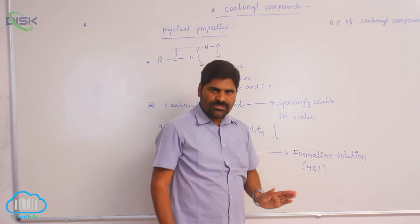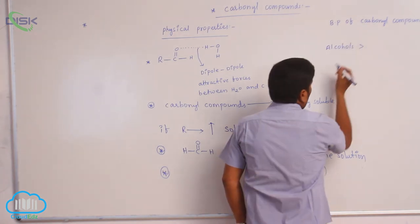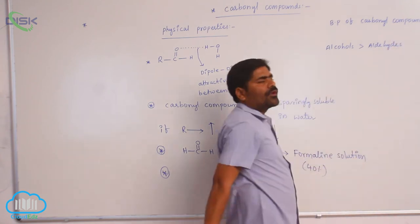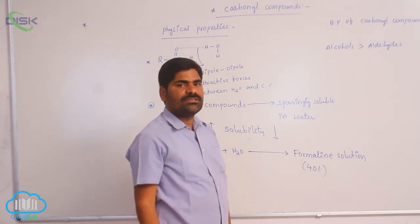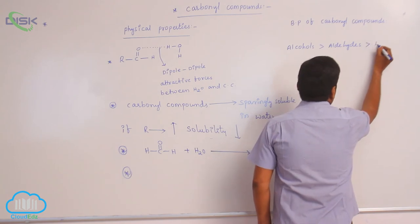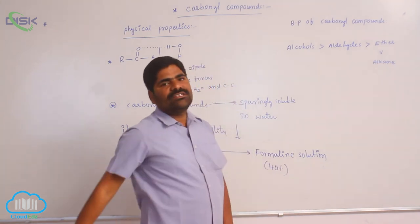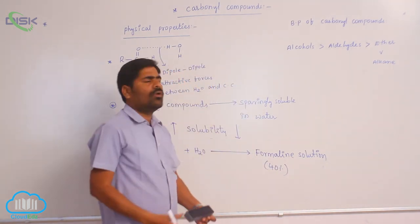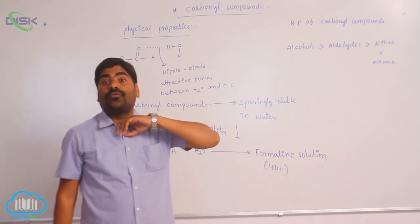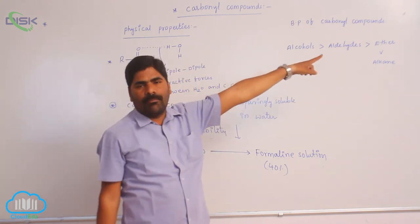That is the reason why the order of boiling points is: alcohols first, then aldehydes (carbonyl compounds), because dipole-dipole attractive forces are greater compared to ethers and alkanes of the same molecular mass. Both aldehydes and ethers have dipole-dipole attractive forces, but these forces are much greater in aldehydes compared to ethers. So aldehydes show higher boiling points than ethers.